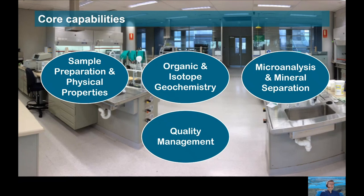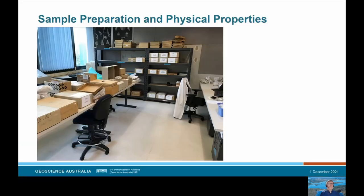Let's start at the beginning with sample preparation. Sample preparation is the first step in the quality journey through the laboratory. We handle thousands of samples a year from all over Australia, but get it wrong here and no matter how precise and amazing the analysis is, the results will be garbage. So we spend a lot of time at this point checking incoming samples against lists of field numbers, creating labels with new sample numbers, checking those labels, subsampling and checking everything again.